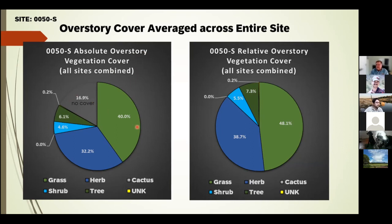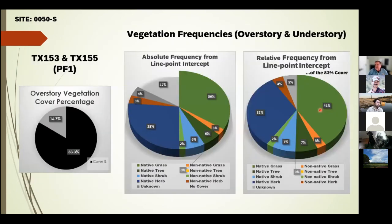Absolute overstory cover counts bare ground plus the cover of the very first plant hit. Relative cover removes the 'no cover' and just looks at overall vegetation components and which ones dominate. Results showed grasses in the lead, closely followed by herbaceous, then plants and shrubs. Combining two different spokes at one treatment site, you can look at native grass versus non-native grass in detail. These metrics can be represented as tables or figures — relative frequency counts all plant hits together, both overstory and understory, different from using just the first hit.